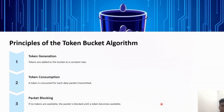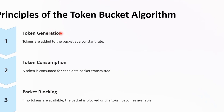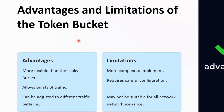A packet can be transmitted only when a token is available; otherwise it will not be transmitted. The main principles of the token bucket algorithm are: generation of tokens at a constant rate, consumption of a token for each data packet transmission, and blocking packets if no tokens are available until a token becomes available.